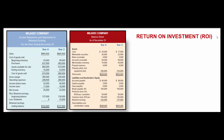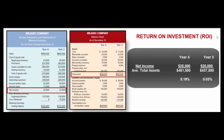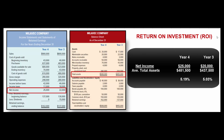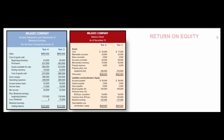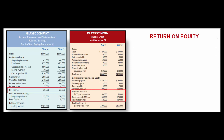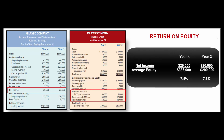Two more profitability ratios: return on investment (ROI) is net income over average total assets — 5.19% for year four and 5.03% for year three. A very similar ratio is return on equity: net income over average total stockholders' equity — 7.4% for year four and 7.6% for year three.